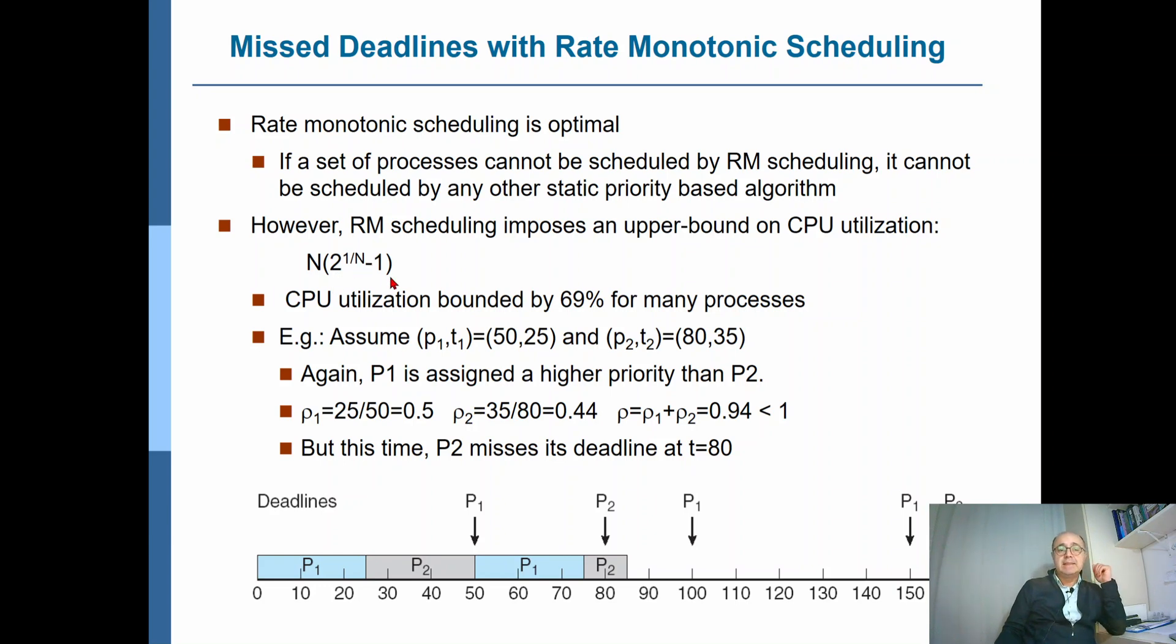So, if you have a single process in the system, then you could use a CPU with 100% utilization. However, as the number of processes in the system increases, the CPU utilization will decrease.